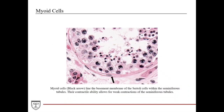Here's a great view of a myoid cell, indicated by the black arrow. You can see they're found on the outer portion of the seminiferous tubule, lining the basement membrane. Their contractile ability creates weak peristalsis-type contractions to help propel sperm throughout the seminiferous tubules.